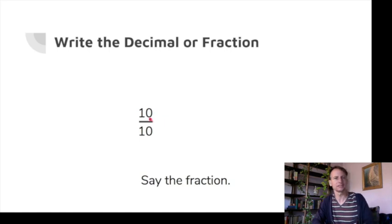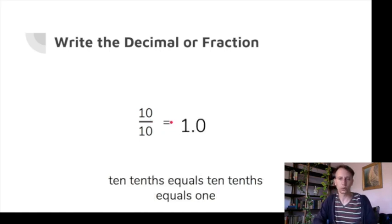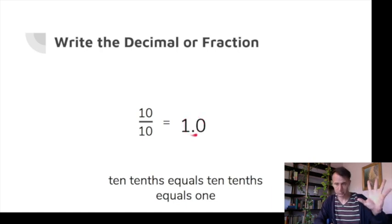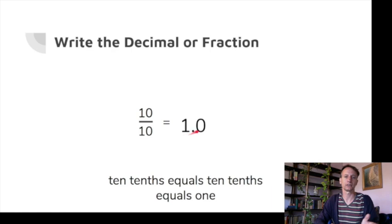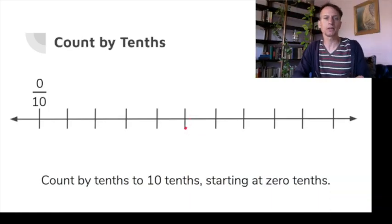Here's an interesting one: ten-tenths. What would that be as a decimal? We'd write 1.0. Look — there's the number 10, which ends in the tenths place, so it's ten-tenths, which of course equals one.